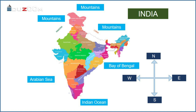As you can see in the map, India has a varied topography and physical features. There are mountains in the north-west, north and north-east. The mainland tapers towards the south, with the Indian Ocean dividing itself into two seas — the Arabian Sea on the west and the Bay of Bengal in the east.